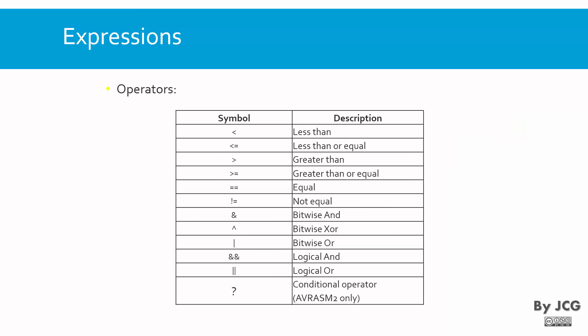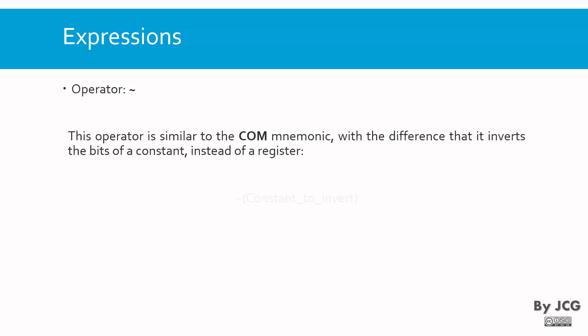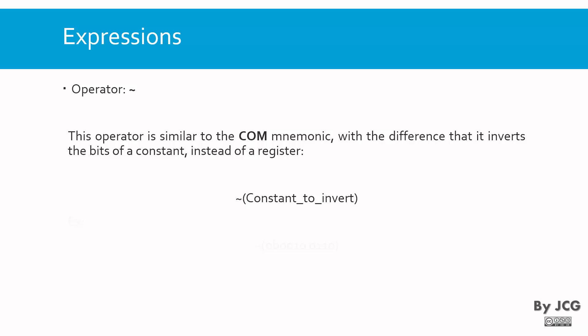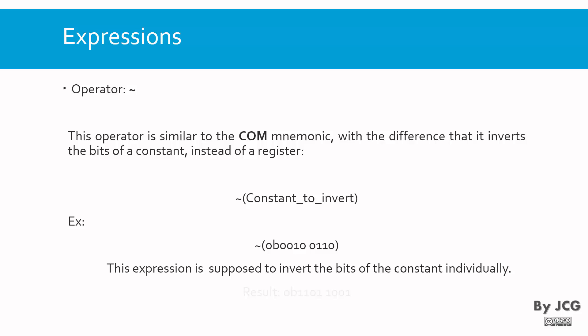Let's start with the bitwise NOT operator. This operator is similar to the COM mnemonic, with the difference that it inverts the bits of a constant. Remember that the COM mnemonic works on a register, like COM register 16, so whatever is in register 16 is variable — we don't know its contents. On the other hand, when we use this operator, we work with a constant, so it is always known — it's fixed. The syntax is: the operator followed by the constant to invert. The expression inverts all bits of the constant bit by bit, giving the corresponding result.